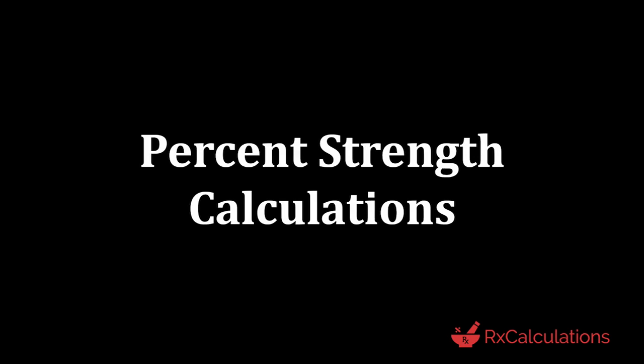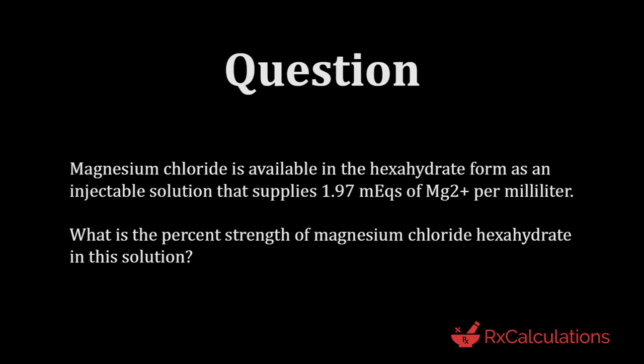If you need a more comprehensive tutorial on percent strength calculations or simply want to see more solved examples, I'm going to put a link to a playlist in the description and in the cards. Now let's get right to the question. This question says magnesium chloride is available in the hexahydrate form as an injectable solution that supplies 1.97 milliequivalents of magnesium ion per milliliter. What is the percent strength of magnesium chloride hexahydrate in this solution?